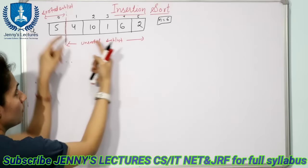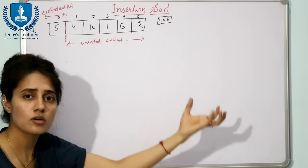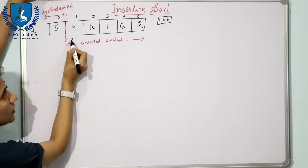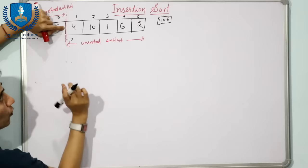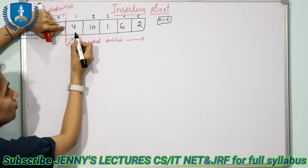We are going to trace the unsorted sublist starting from index 1. One by one, we take values from the unsorted sublist and find the appropriate place for that value in the sorted sublist, then insert it. The loop would be from 1 to n (less than n). n is 6, so the loop goes from 1 to 5.